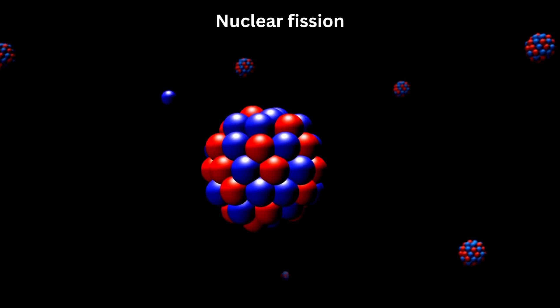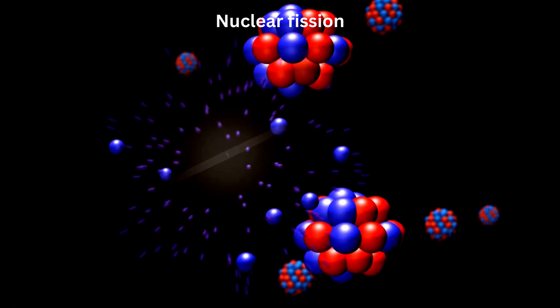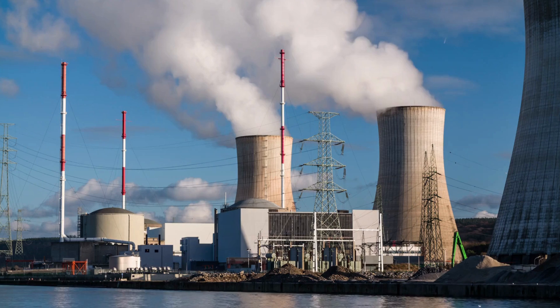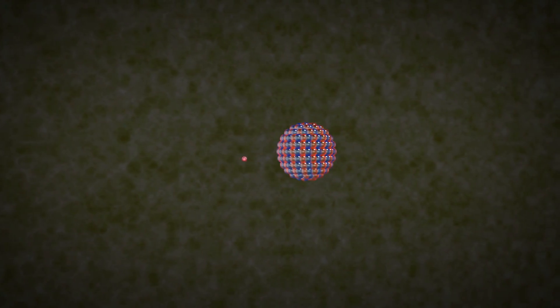Nuclear fission is a process in which an atom's nucleus splits into two or more smaller nuclei, releasing a significant amount of energy. Both nuclear electricity and nuclear weapons are made possible by the enormous amount of energy released.